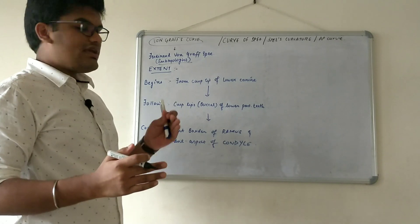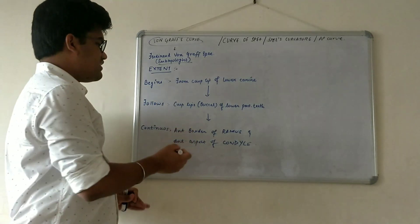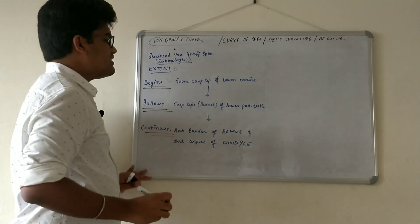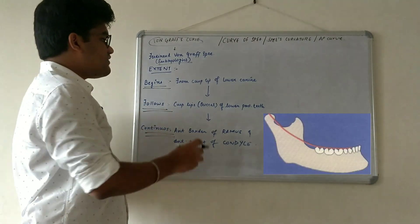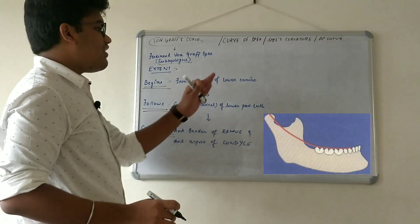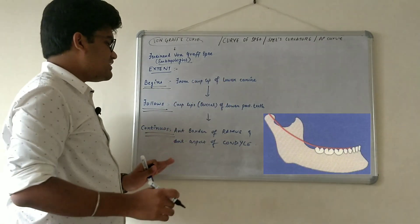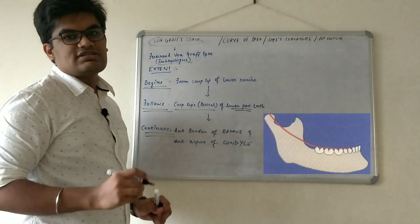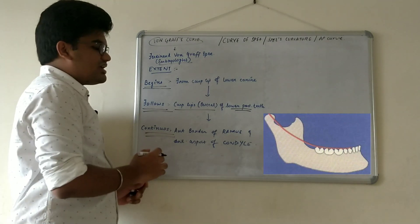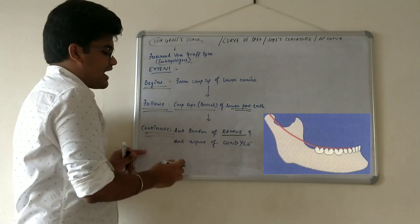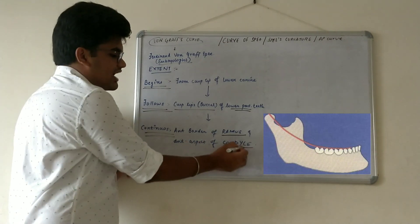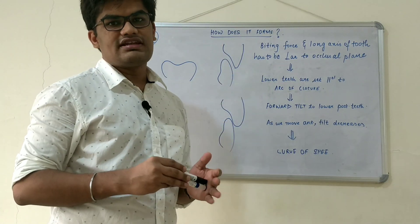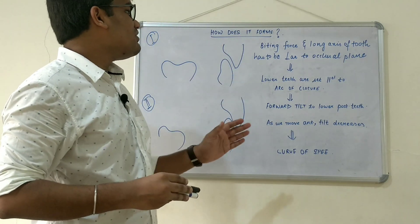Coming on to the extent of the curve of Spee, we can remember it in three aspects: beginning, follows, and continuous. The curve of Spee begins from the cusp tip of the mandibular canine, from there it moves posteriorly and follows the buccal cusp tips of the lower posterior teeth — that is, premolars and molars — and from there it goes continuous along the anterior border of the ramus, ending at the anterior aspect of the mandibular condyle.